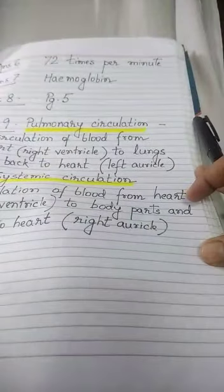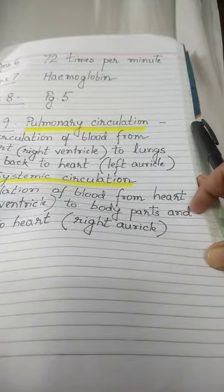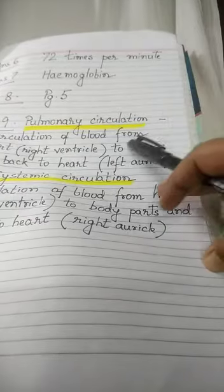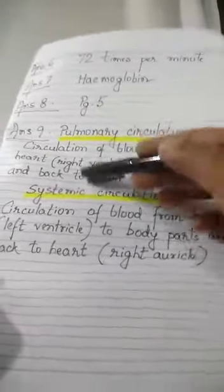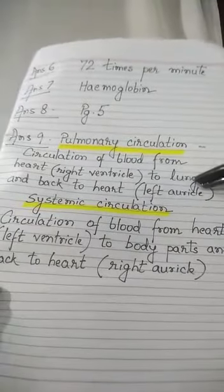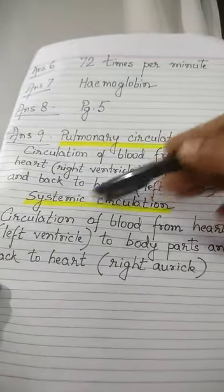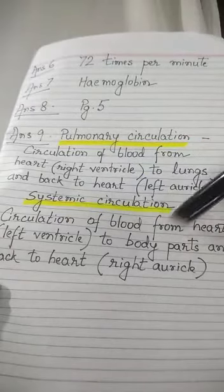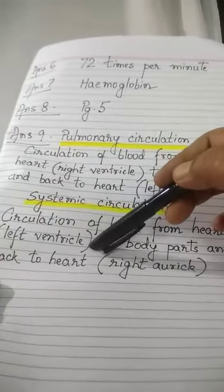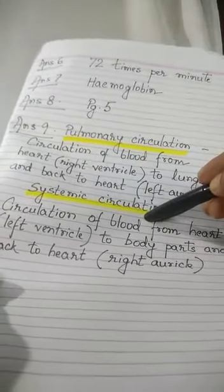Question number nine: differentiate between pulmonary circulation and systemic circulation. Pulmonary circulation is the circulation of blood from the right ventricle of the heart to the lungs and back to the left auricle of the heart. Systemic circulation is the circulation of blood from the left ventricle to the body parts and back to the right auricle of the heart.